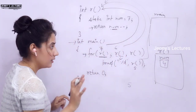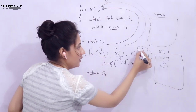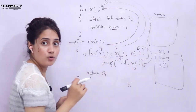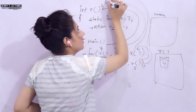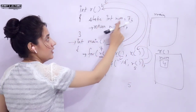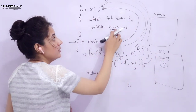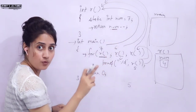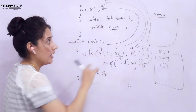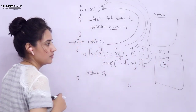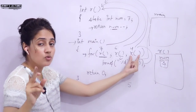After printing, control goes to the increment/decrement part of the for loop, where we are again calling function r. Control goes to r, num holds its previous value of 4. return num-- returns the original value 4, so 4 is returned to that part, and then num becomes 3.